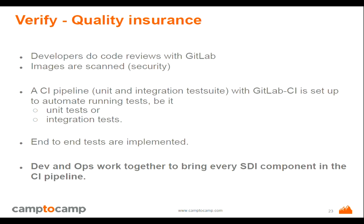Once the software is developed, we need quality assurance. In such a large system, we need to automate it. With GitLab, we had a continuous integration pipeline that would run tests on each commit — unit tests, integration tests, and end-to-end tests, such as logging into the user interface, making a request, and checking the result. The challenge here is that as a DevOps project, development and operation teams needed to work together to bring their software into the CI pipeline with a common way to test. This has been a solid foundation for the project as the scope grew.